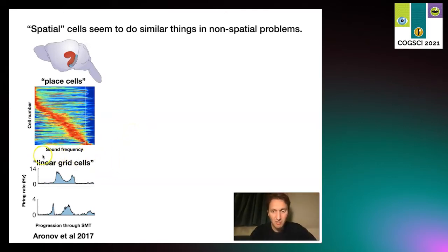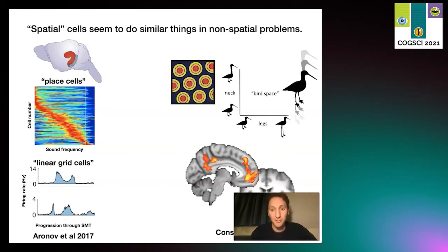This is one cell that just cares about one location there and another cell that cares about another location. You also see these linear sound grid cells that don't just code for one sound frequency but code for multiple frequencies. Similarly, if you ask participants to navigate a bird space where the bird's neck length and leg length morph along trajectories in bird space,